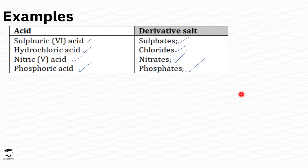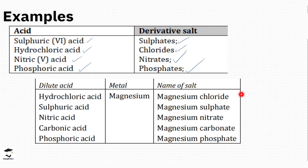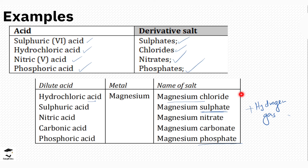For example, if we react magnesium with these acids: magnesium reacts with hydrochloric acid to form magnesium chloride and hydrogen gas; magnesium reacts with sulfuric acid to form magnesium sulfate and hydrogen gas; magnesium reacts with nitric acid to form magnesium nitrate; with carbonic acid to form magnesium carbonate; and with phosphoric acid to form magnesium phosphate — each with hydrogen gas produced.